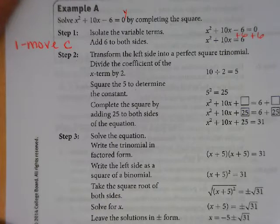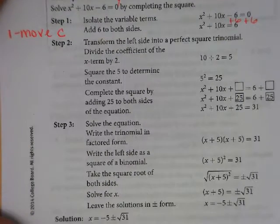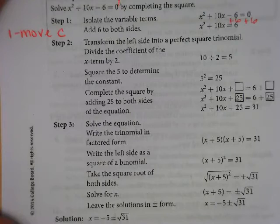Step two is extremely wordy. Transform the left side into a perfect square trinomial. Divide the coefficient of X by two. Square the five to determine the constant. Say what?